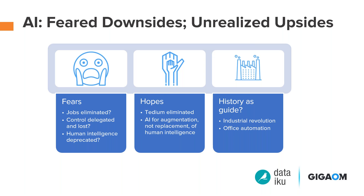The fear that our jobs are going to get eliminated and we're going to lose control, or become dumber — to an extent, that's not going to happen, because we already are using a lot of AI in our lives and those things haven't happened yet. You can debate whether smartphones have made us dumber, but that's a separate issue. If we give AI a good opportunity, it can actually create new kinds of jobs.